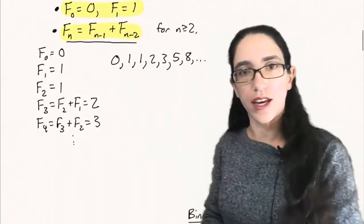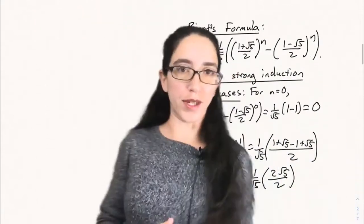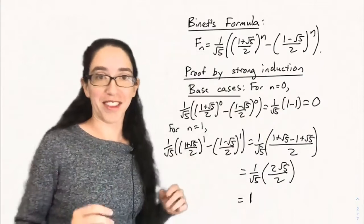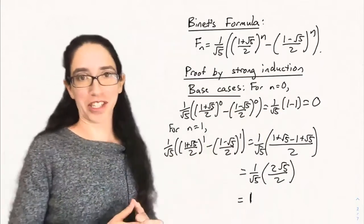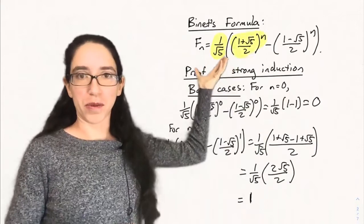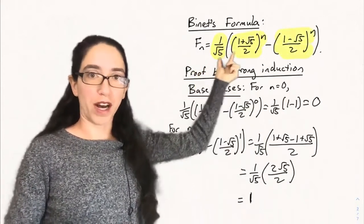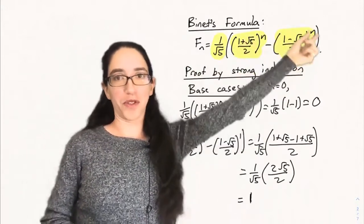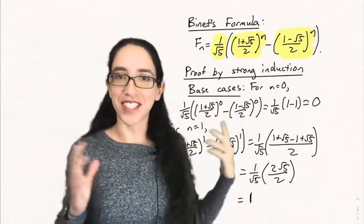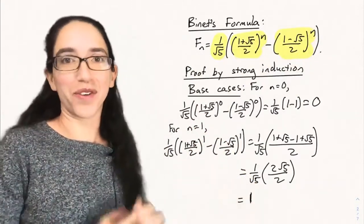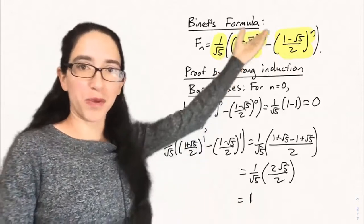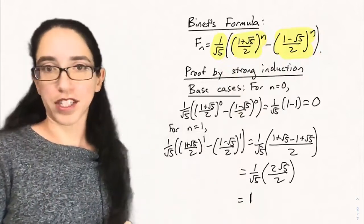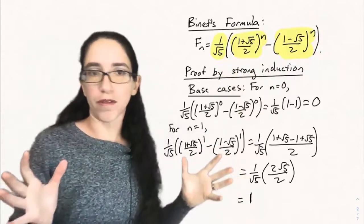That's the Fibonacci sequence. We're going to see some properties of it today, including the explicit formula for the Fibonacci numbers, which is far more complicated than the 2 to the n we had before. Binet's formula says Fₙ equals 1 over √5 times [(1+√5)/2]ⁿ minus [(1−√5)/2]ⁿ. It's kind of remarkable that this always gives an integer, let alone the nth Fibonacci number. But somehow these square root of 5s always cancel when you plug in an integer for n.